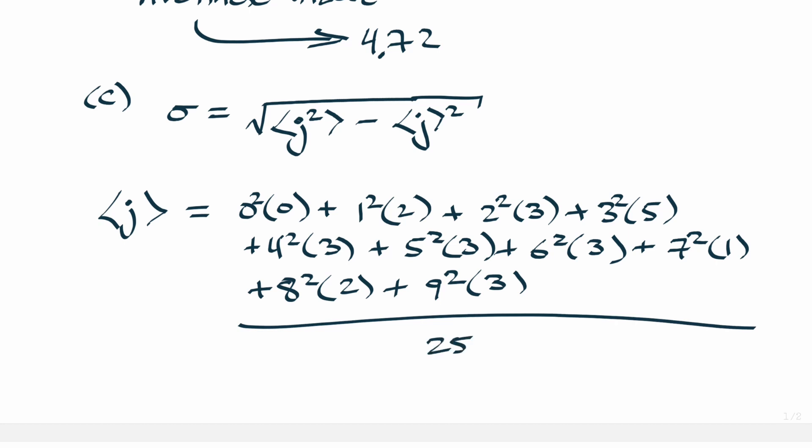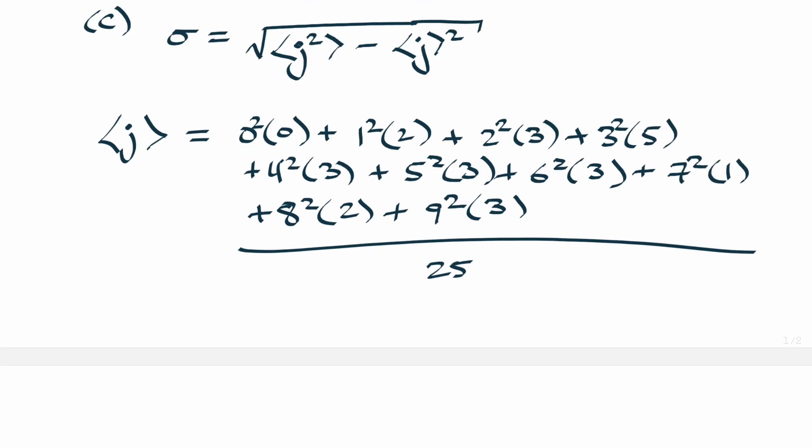And what you are left with, once again not really worth showing the rest of the math there, but you're left with 28.4. And so that's your j squared, your expectation value of j squared rather.